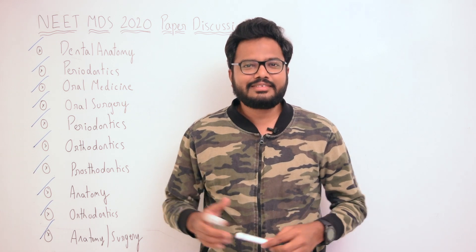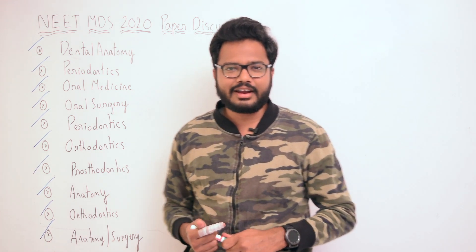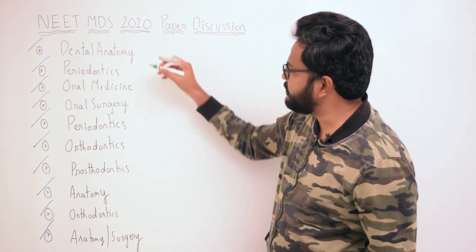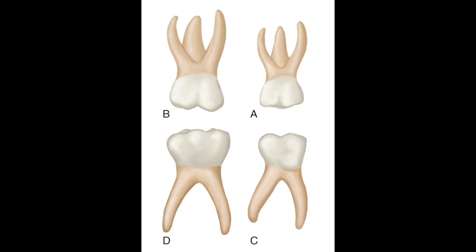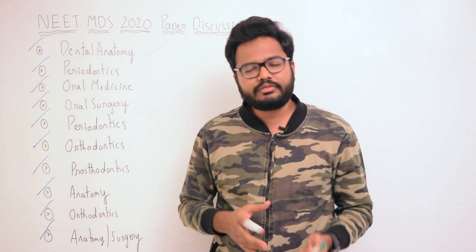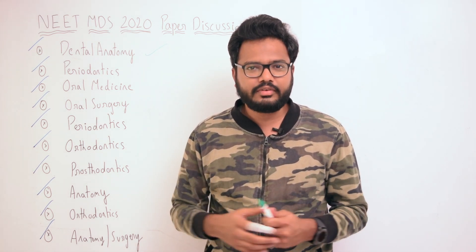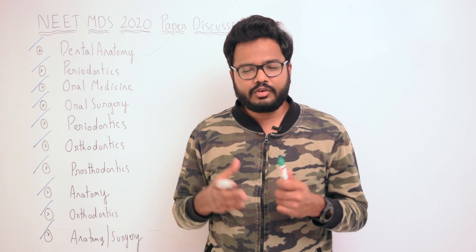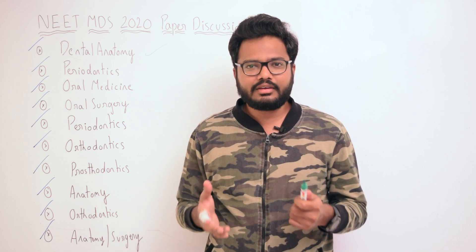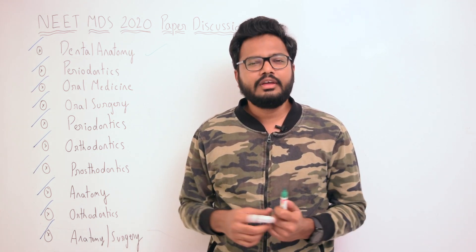In this video, let's have an image-based discussion starting with one specific question from dental anatomy. We have primary teeth, and we can differentiate primary teeth from permanent teeth based on morphologic features. Clearly you can see that the roots are narrow and diverging.